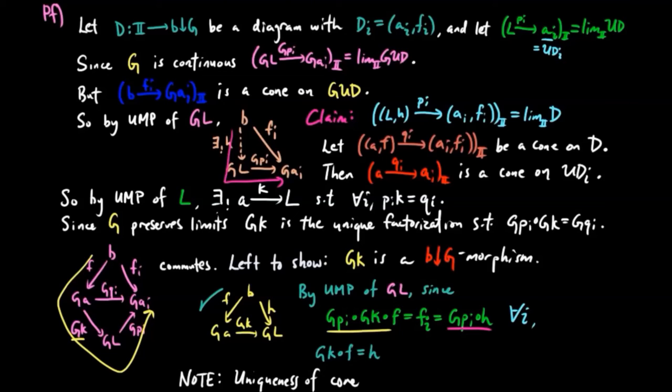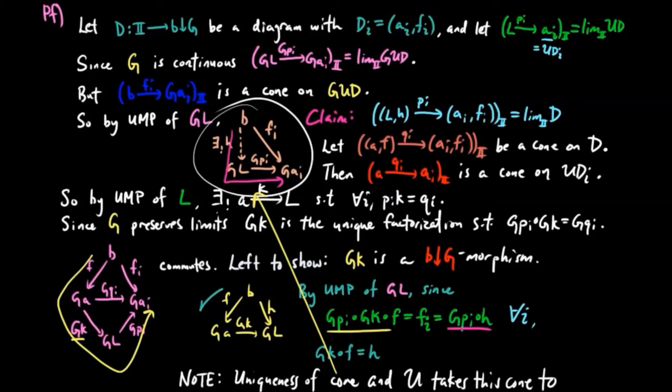Note that the uniqueness of this limit cone comes from the uniqueness of H above, and it is easy to see U takes this limit cone to the limit above. Therefore, U creates limits, which completes the proof.